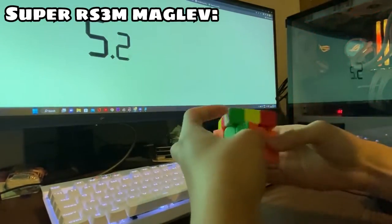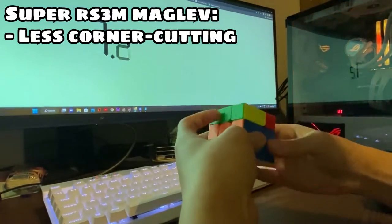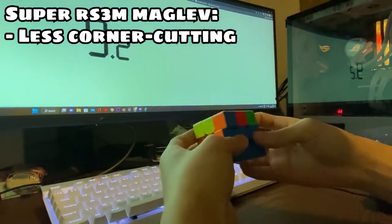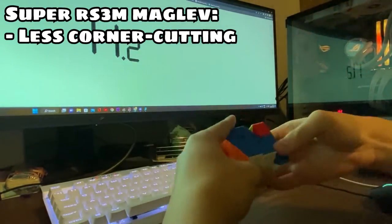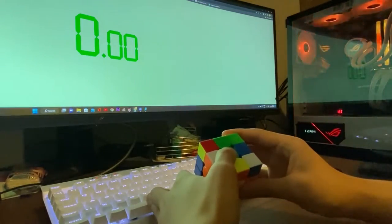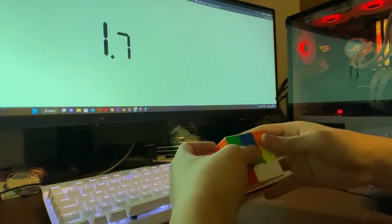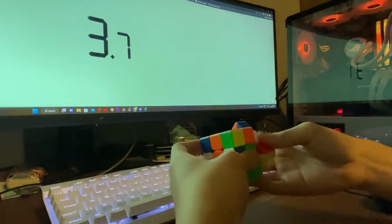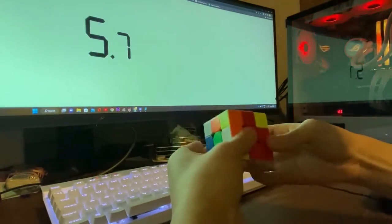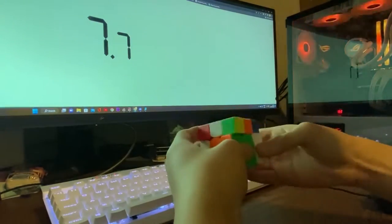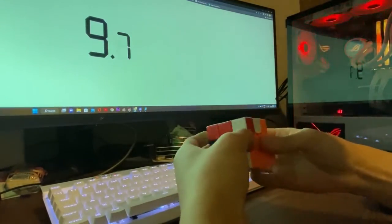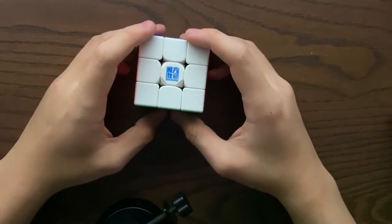Comparing it to the RS3M, it definitely has less good corner cutting, which is a downside to the cube. The RS3M, I think it's because I've set it up and stuff for years. So that's why it's performing that well. But I think it's always because of the corner cutting that's pulling this cube down. That's all I really have to say for this cube.